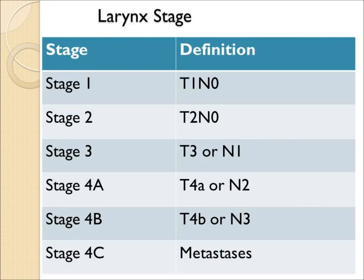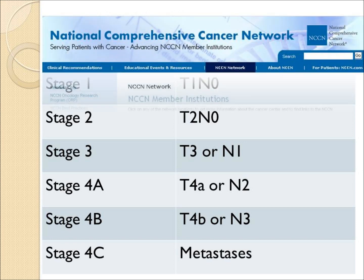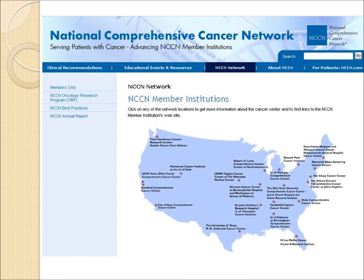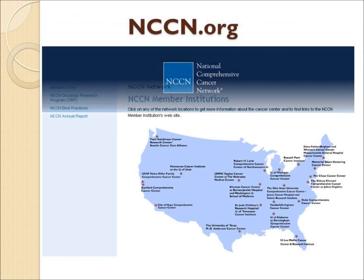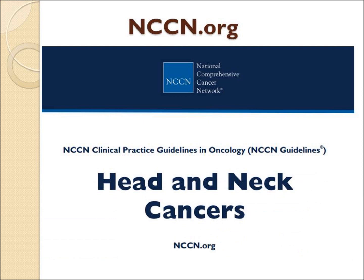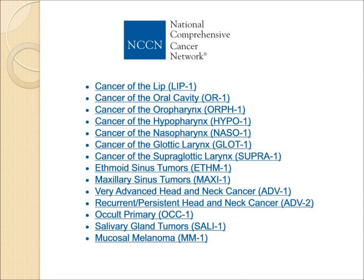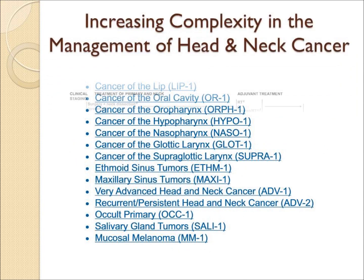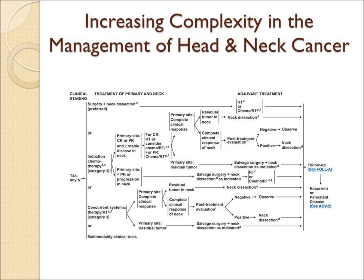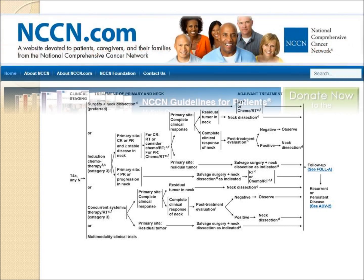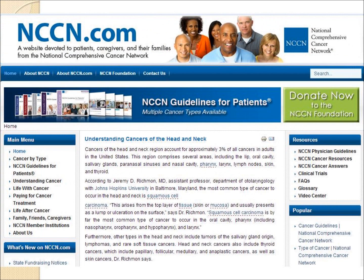The best advice on treating cancer is often found on the website of the National Comprehensive Cancer Network, a network of academic cancer centers. Their website is accessible at nccn.org. It is quite complicated, and patients should ask their doctor to review the current guidelines that apply to them. It is quite comprehensive, includes multiple sites in the head and neck area, and has very detailed treatment algorithms or protocols. There is also a patient-friendly website from the NCCN at nccn.com.